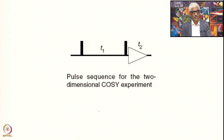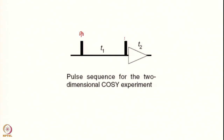This is the pulse sequence for the 2D COSY experiment. We start with a 90-degree pulse, and then a second pulse of flip angle beta — which can also be a 90-degree pulse. Here you have the T1 period, which is called the evolution period. The beta pulse, the second pulse, also acts as the mixing. The T2 is your detection period. The FID is collected during the T2 period. Therefore you generate a two-dimensional spectrum after a two-dimensional Fourier transformation. The evolution time is incremented systematically from one FID to another FID, generating two-dimensional information.